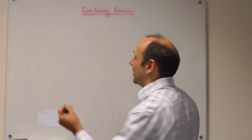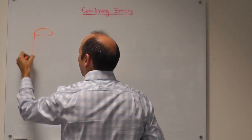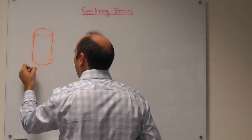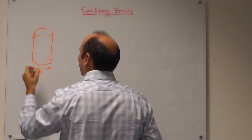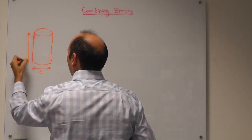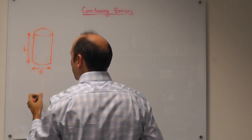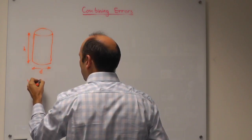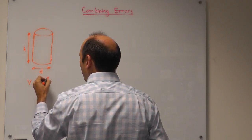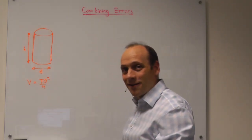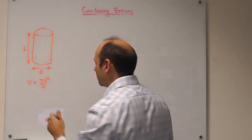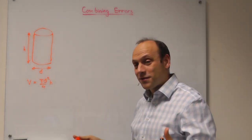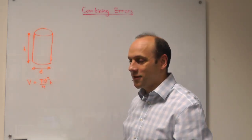Say I've got a cylinder with a diameter d and a height h. What's its volume? Well, its volume is going to be the area of the circle, which is pi d squared over 4 — that is pi r squared, where d is 2r — times the height. My question is: what's the uncertainty going to be in the volume if I know the uncertainty in the diameter and the height?